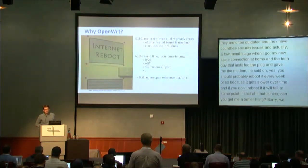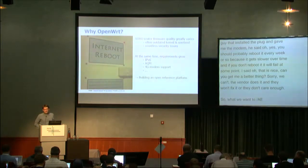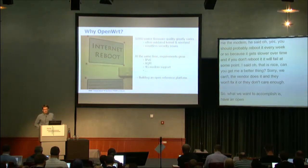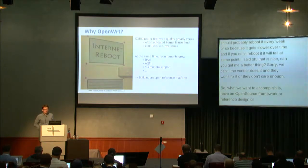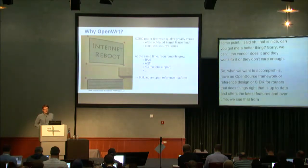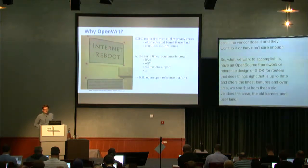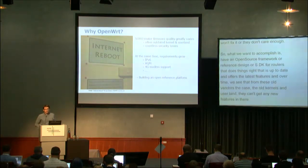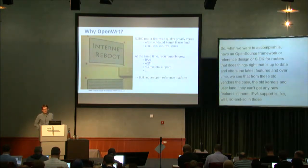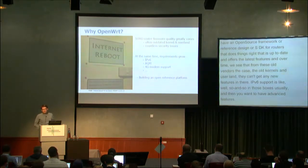The vendor does it and they won't fix it or they don't care enough. So what we want to accomplish is have an open source framework or reference design or SDK for routers that actually does things right, that is up to date, that offers the latest features. And over time, we see that from these old vendor SDKs, the old kernels and the old user land, they just can't get any new features in there. IPv6 support is usually so-and-so in those boxes. And then you want advanced features like AQM or QoS, there's buffer bloat and so on, and it's very hard to fix that based on those old SDKs.